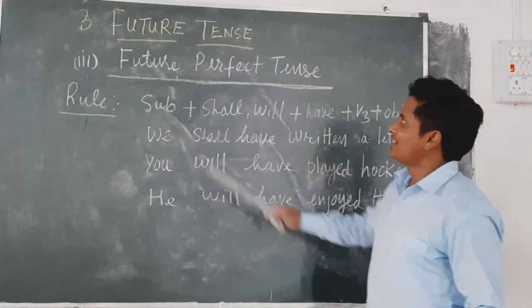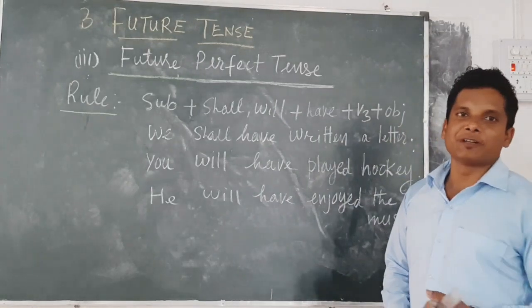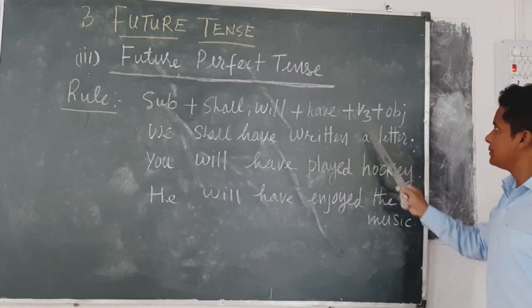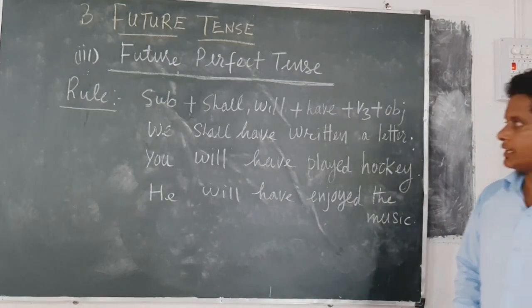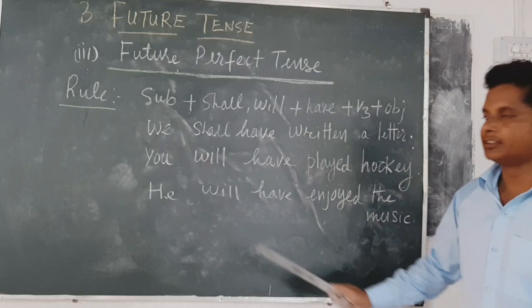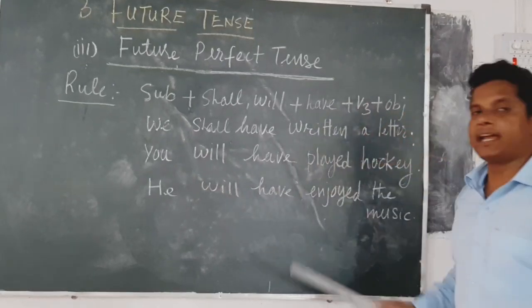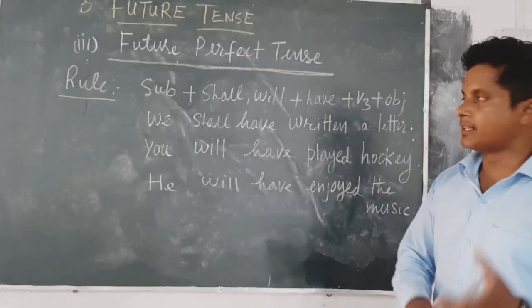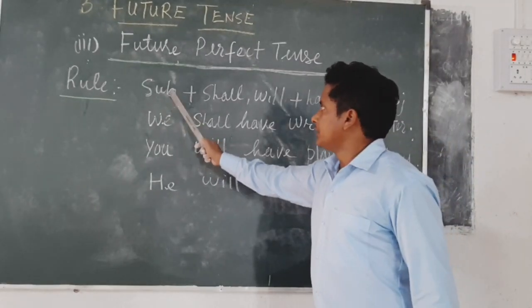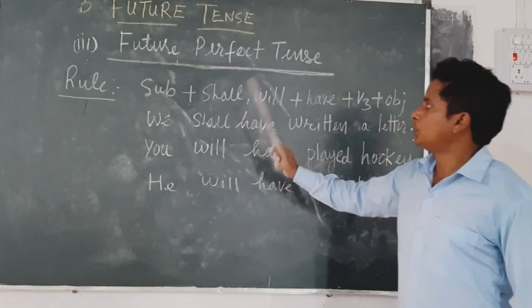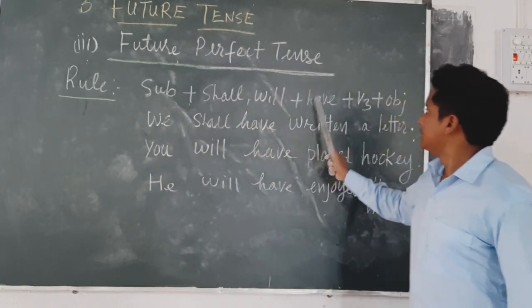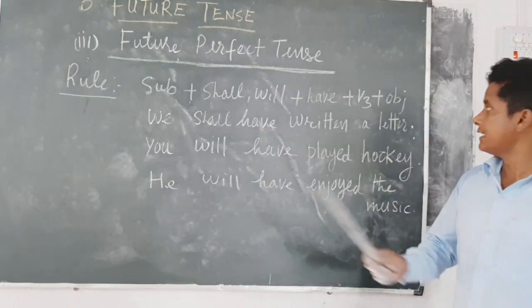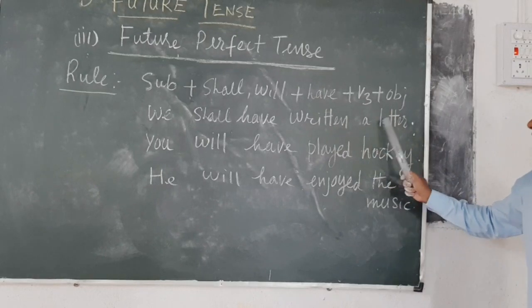Third one is future perfect tense. The rule of future perfect tense is: subject plus shall/will plus have plus third form of verb plus object. Examples are: we shall have written a letter, you will have played hockey, he will have enjoyed the music. In the first sentence, subject is we, with we shall is used, then have, the third form of the verb write is written, and object is a letter.